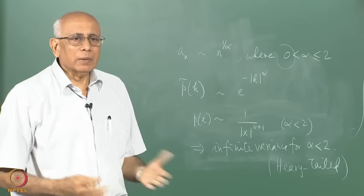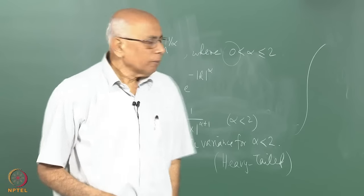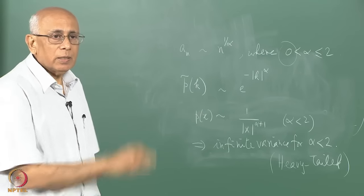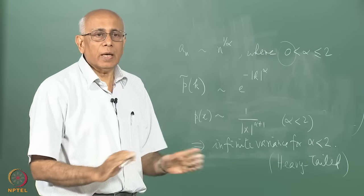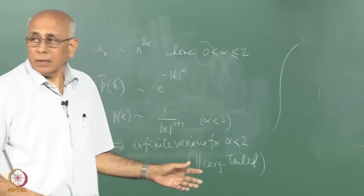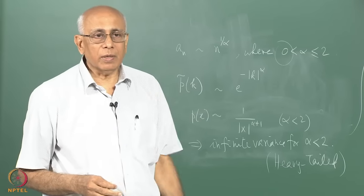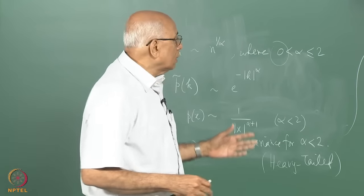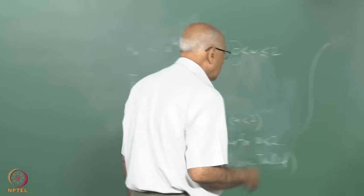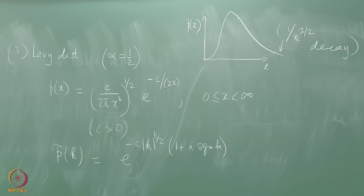Where do these distributions appear physically? While explicit forms for the probability density can only be written for the three special cases mentioned — for general alpha between 0 and 2, one can write closed forms only for specific rational values of alpha — the characteristic function gives all the information we need. Let's look at physical examples where these distributions occur.